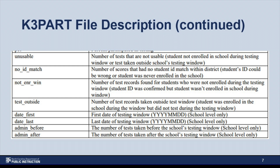The Not ENR Win column contains the number of scores for students who were assessed but not enrolled in PowerSchool during the benchmark window. This can happen, for example, if a student enters the school toward the end of the benchmark window but is not enrolled in PowerSchool until after the benchmark window has closed. The Test Outside column contains the number of students who were tested outside of the benchmark window. Just like in the K3 audit file, the Date First and Date Last columns contain the first and last dates of the benchmark window as recorded in MCLASS. If you had students tested outside the benchmark window, the Admin Before column will display how many students were tested before the window started, and the Admin After column will display how many students were tested after the window ended.